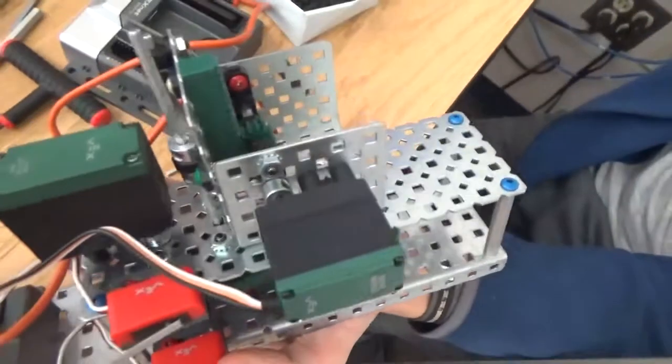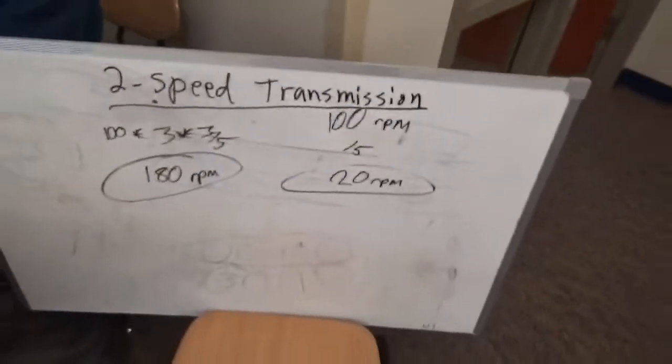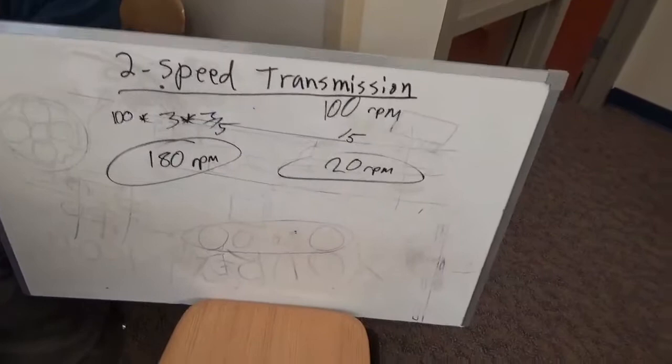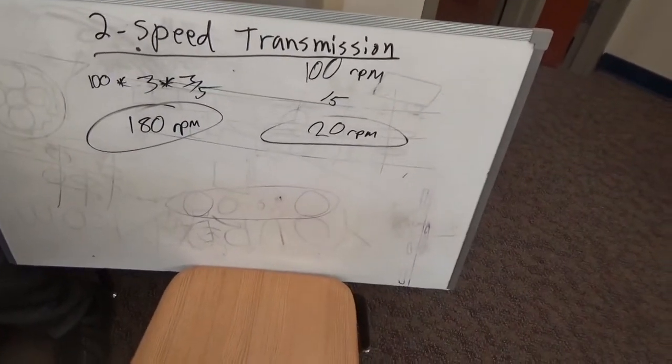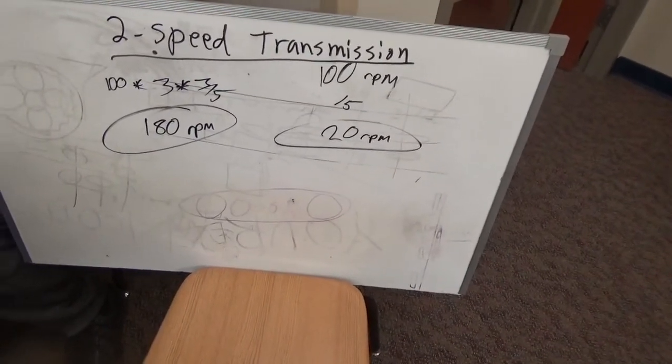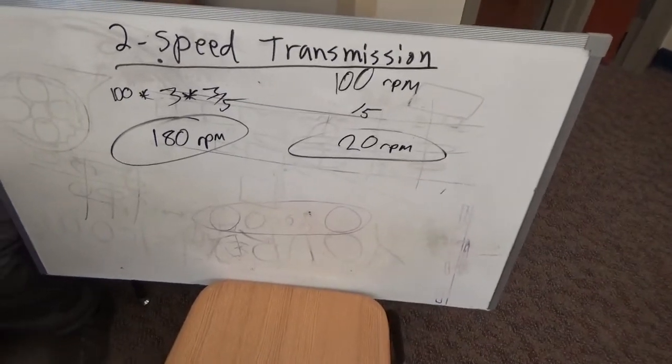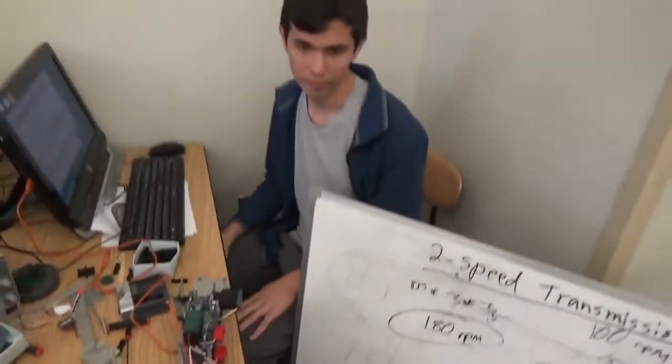All right. Very awesome. Two-speed transmission. 180 and 20... Yeah, 20 is the high torque, 20 RPM is the high torque, so it would be low speed. Yeah. Very good. Very nice job.